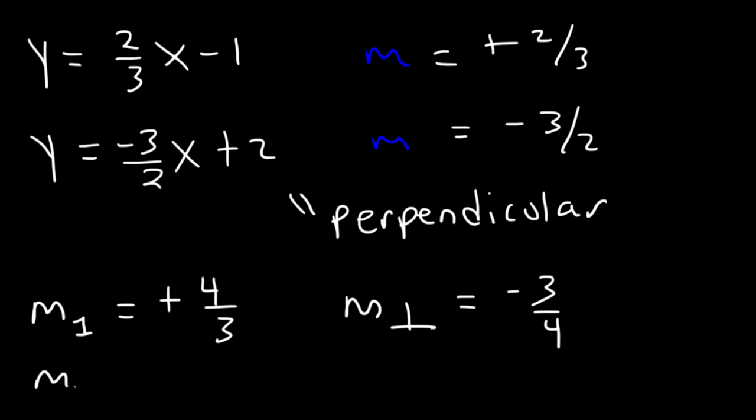Now let's say if the slope of the first line is negative 7 over 5. The slope of the perpendicular line is positive 5 over 7.